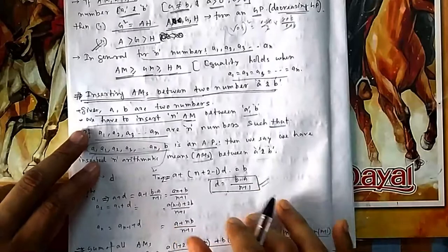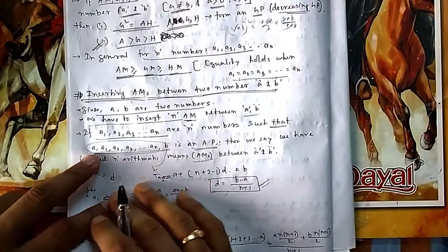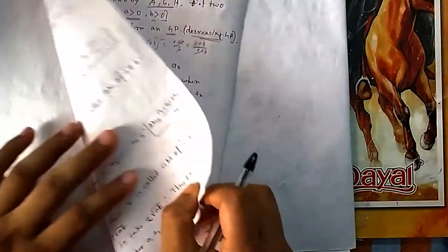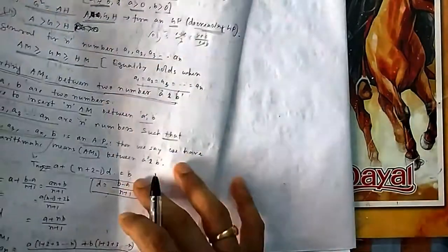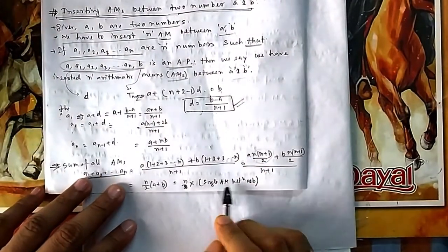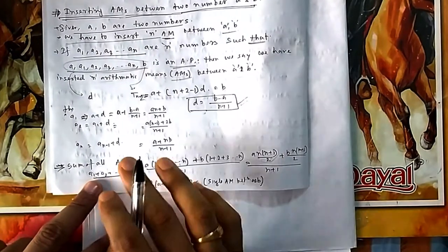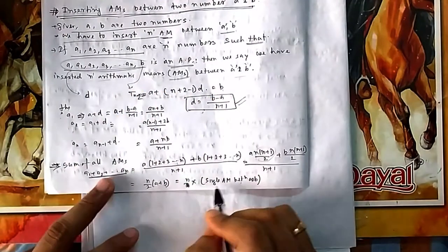That is n times (a + b)/2. What is (a + b)/2? That is the single AM between a and b. So the sum of all n inserted AMs equals n times the single AM. For example, if you insert 10 AMs, the sum of all 10 equals 10 times the single AM.